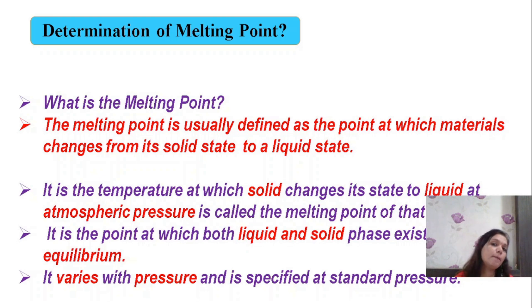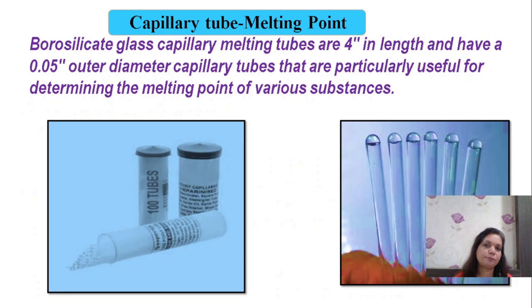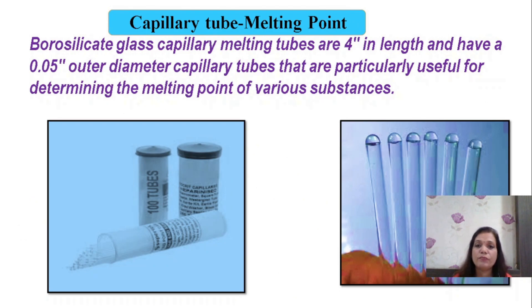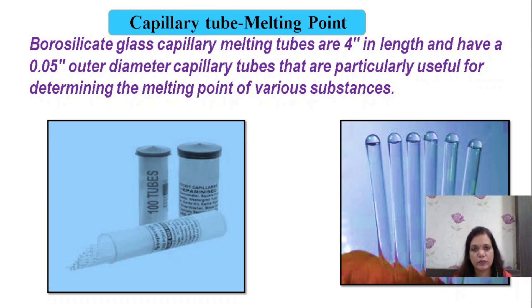Melting point is the temperature at which a solid changes into a liquid state, or we can say at atmospheric pressure the solid and liquid are in equilibrium with each other. It may vary with pressure. To determine melting point, we need to fill the given substance into a capillary tube.